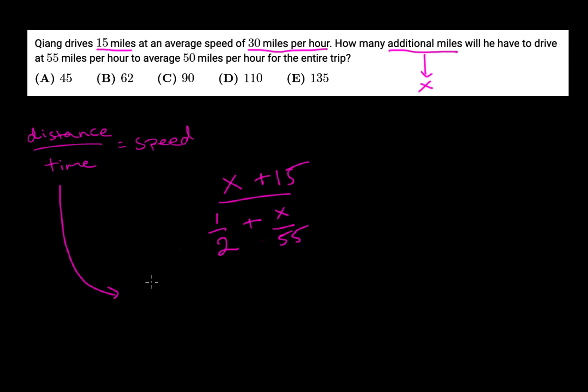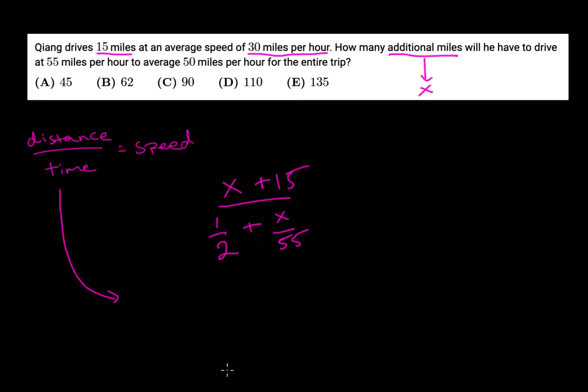So if distance by time equals speed, then how do we know that time equals distance by speed? We can find that out using our original equation. If d by t equals s, we can multiply both sides by t and then divide both sides by s, meaning distance by speed equals time. We're going to say that it would be x, the amount of additional miles he's going to drive, divided by his speed, 55 miles per hour.